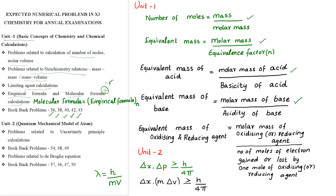Next, equivalent mass of oxidizing and reducing agent is calculated by the formula: molar mass of oxidizing or reducing agent divided by number of moles of electrons gained or lost by one mole of oxidizing or reducing agent. Next, empirical formula and molecular formula calculation — the equation used is: molecular formula equals empirical formula to the power n, where n equals molar mass divided by empirical formula mass.